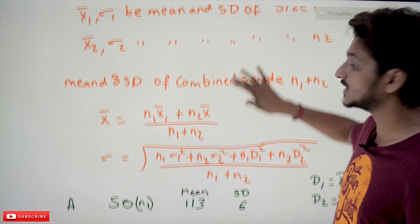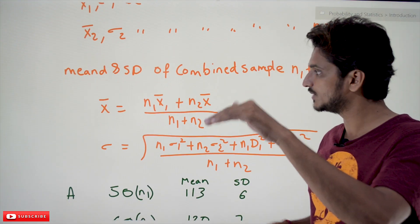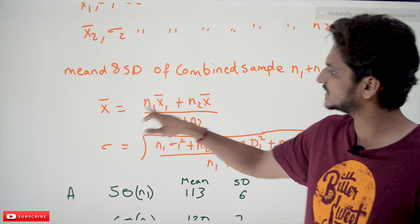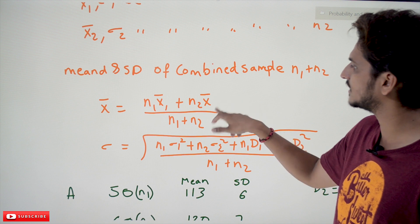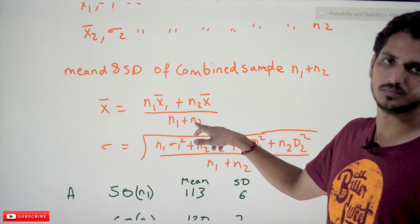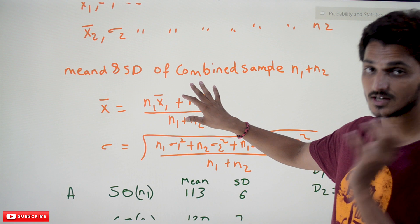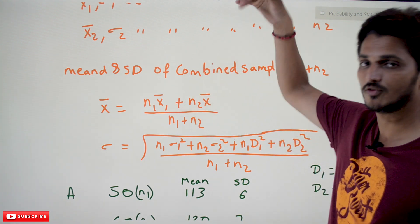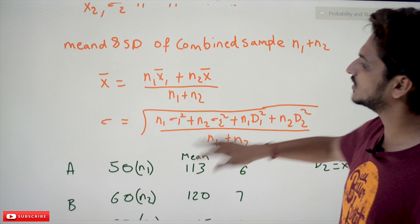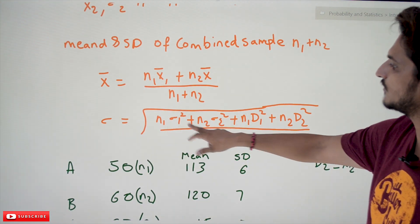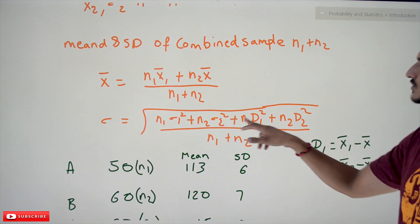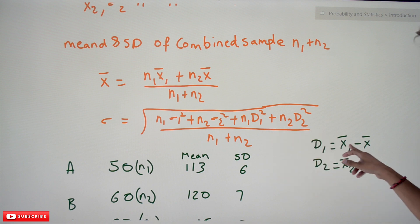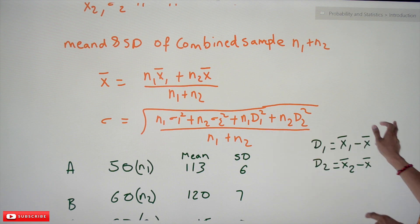From previous classes on arithmetic mean, the combined mean is x̄ = (n₁x̄₁ + n₂x̄₂) / (n₁ + n₂). Similarly, to find the combined standard deviation: σ = √[(n₁σ₁² + n₂σ₂² + n₁d₁² + n₂d₂²) / (n₁ + n₂)], where d₁ = x̄₁ − x̄ and d₂ = x̄₂ − x̄.